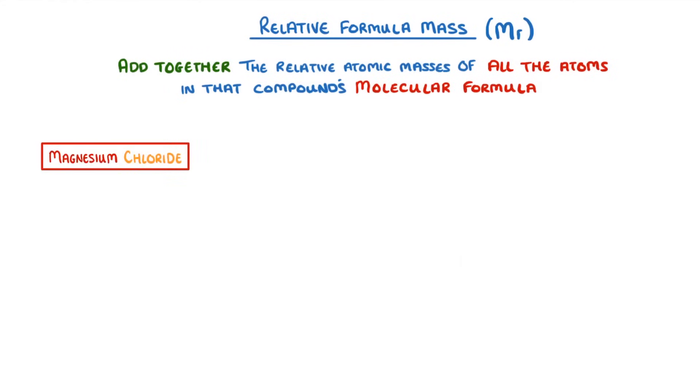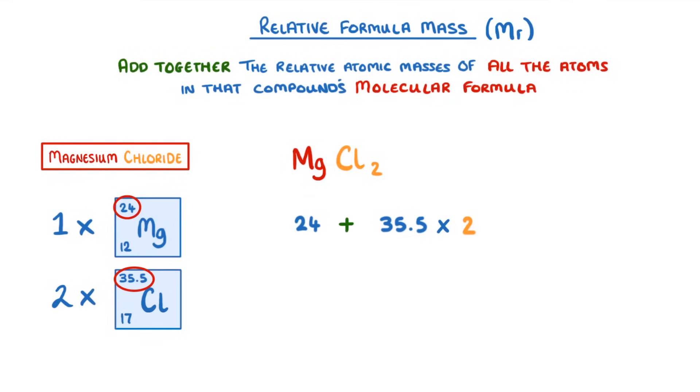So if we took magnesium chloride which has the molecular formula MgCl2 we'd have one magnesium which has a relative atomic mass of 24 and two chlorines which each have an Ar of 35.5 so we'd do 24 plus 35.5 times 2 giving us a relative formula mass of 95.